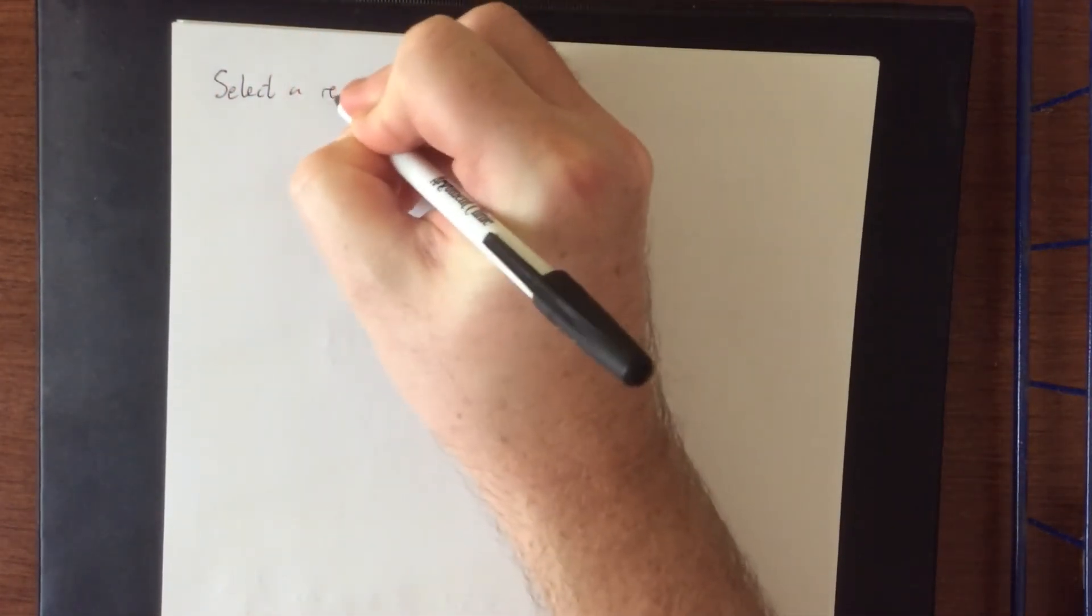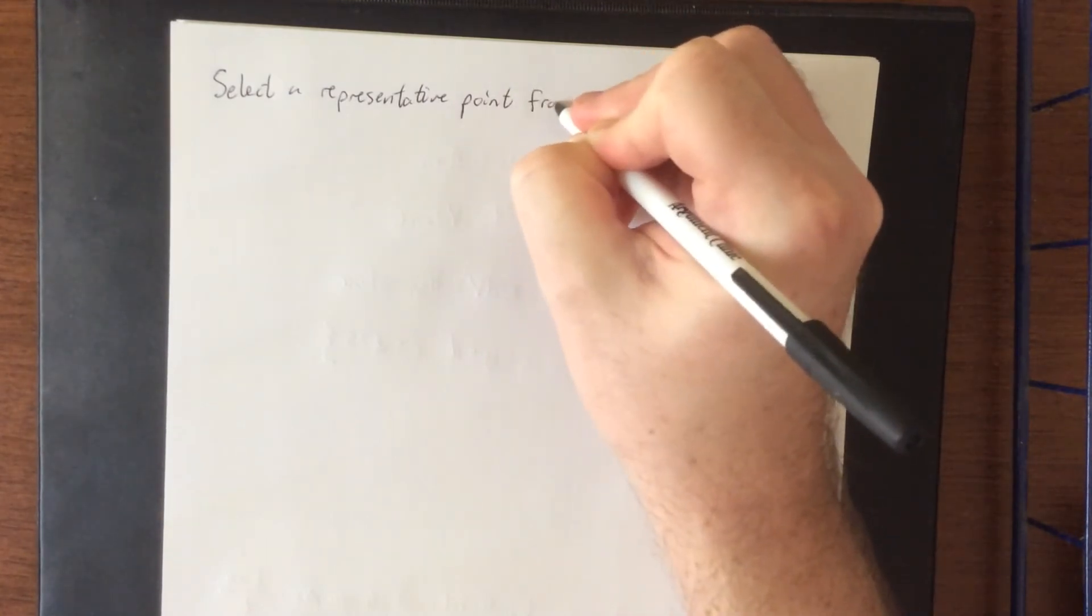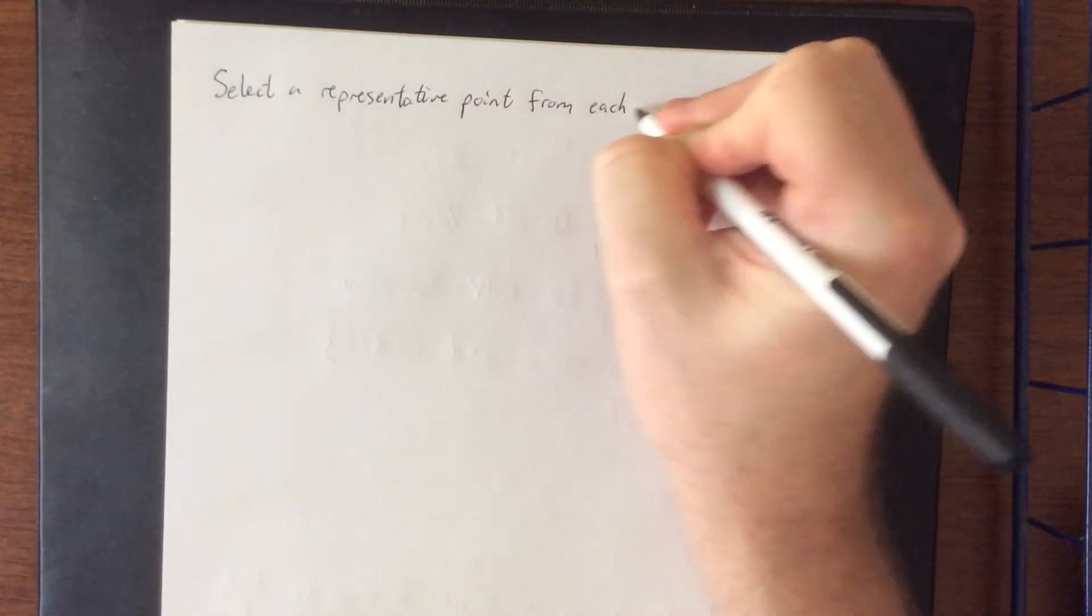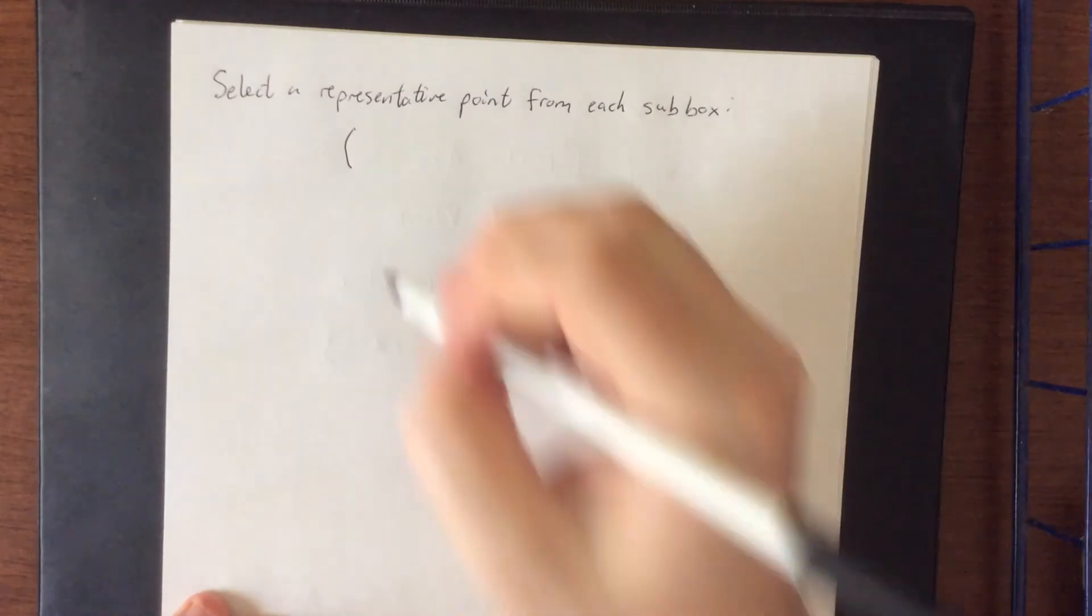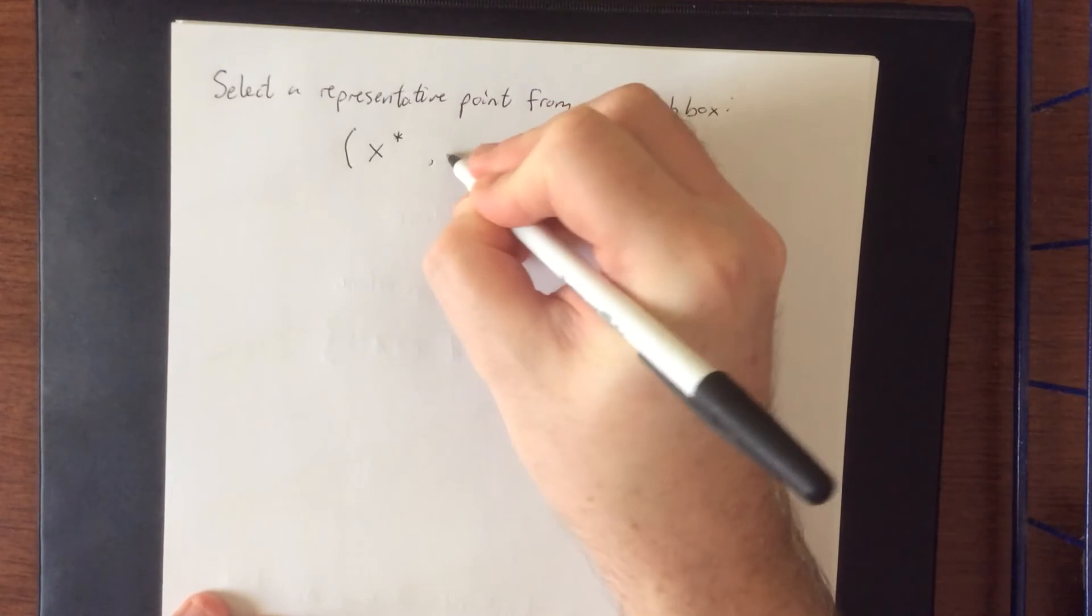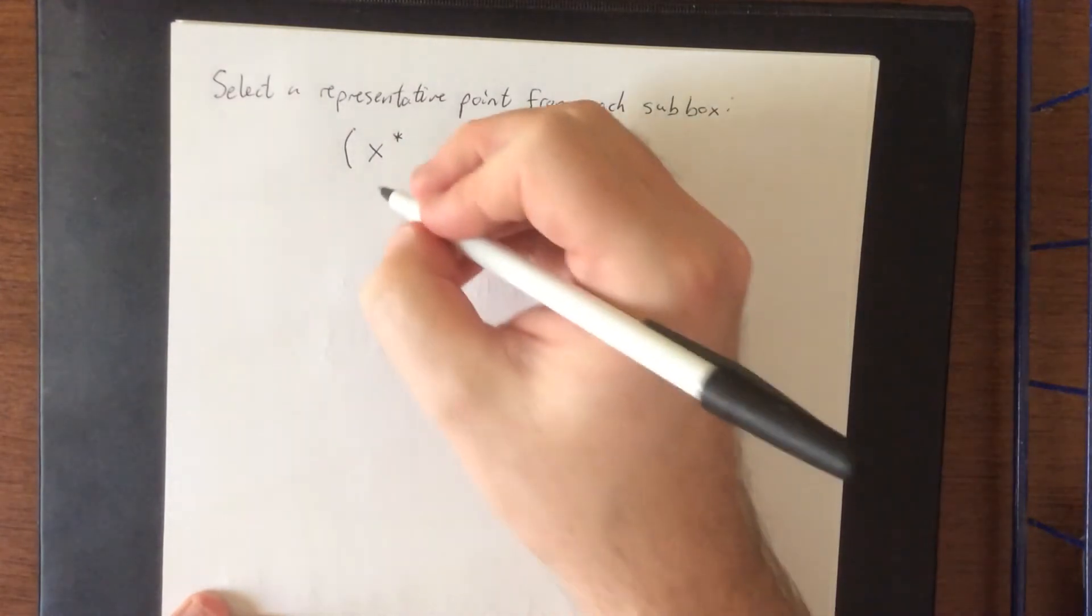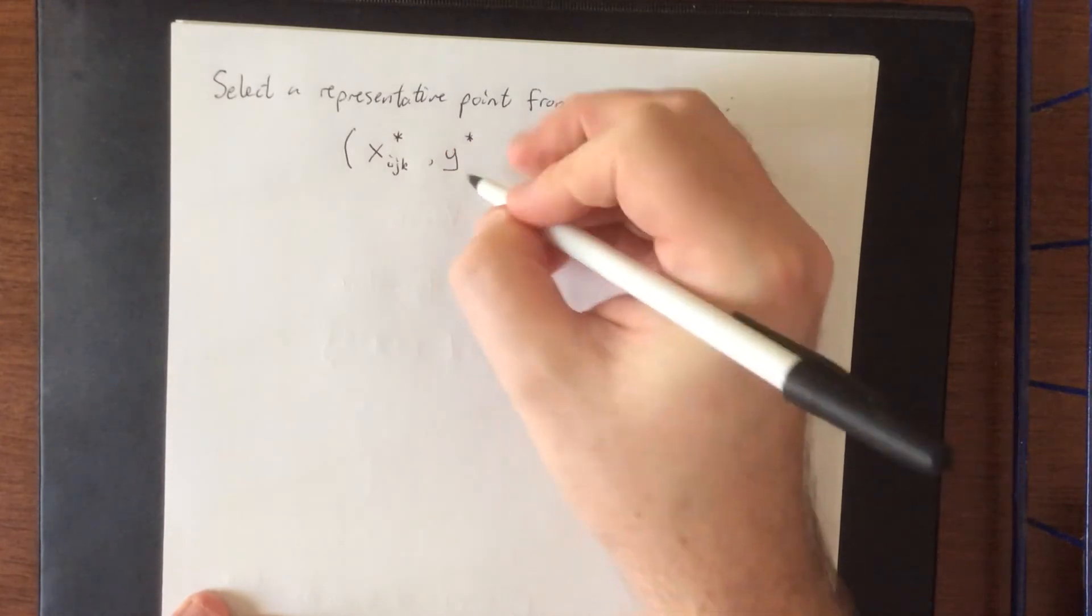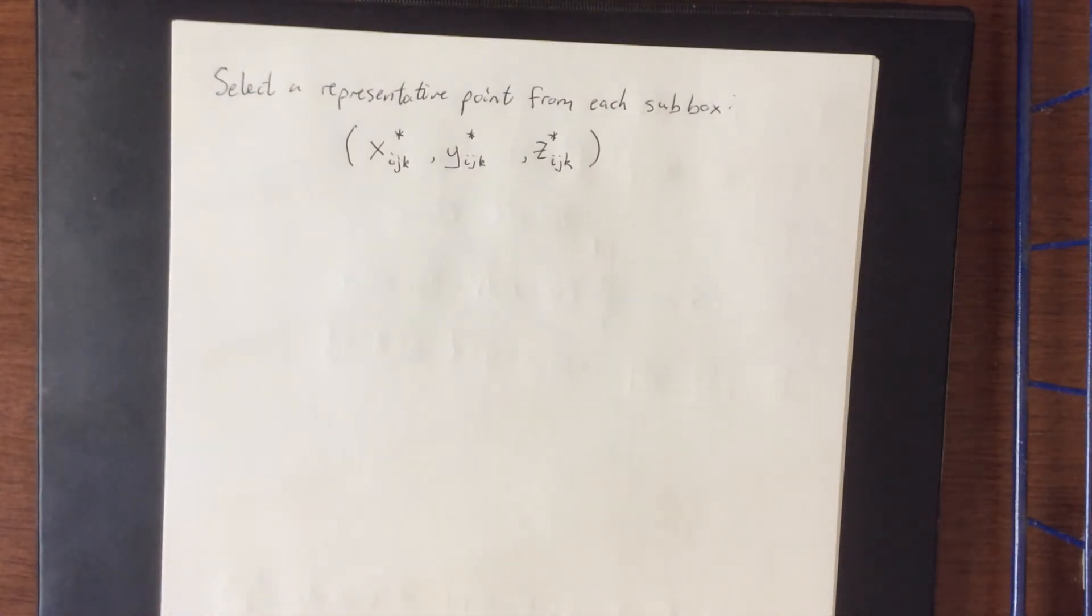So similar to what we did for both the definite integral as well as the double integral, we are going to select a representative point from each sub box. Now we are going to need a total of three indices for each of these. The typical notation that we've used is x star, as well as y star, as well as z star, but I want to make sure that we have room for three different indices. We'll call them i for x, j for y, and k for the z direction. Now given that these are changing from box to box, even as some of these variables stay consistent, we still need three indices for all of them.